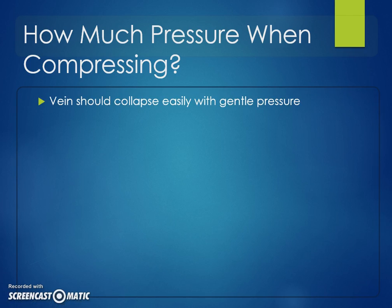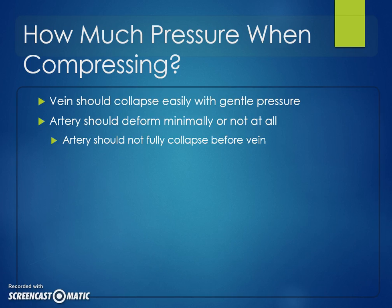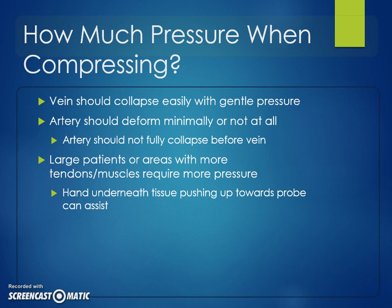The vein should come down easily with gentle pressure. If the artery deforms slightly, that's okay — but if the artery deforms completely and the vein still hasn't collapsed, that's a positive test. Depending on where you're compressing, tendons and muscles may require more pressure, but using a free hand behind the thigh or in front of the knee to push up and meet the probe allows you to use much less pressure.